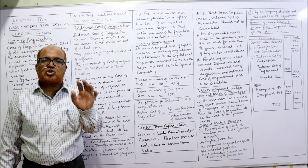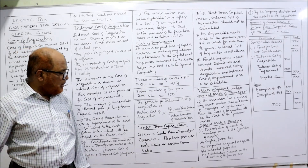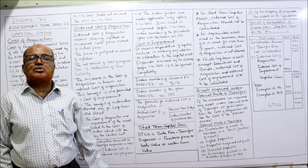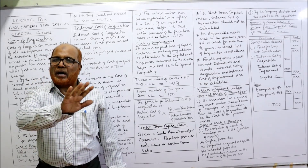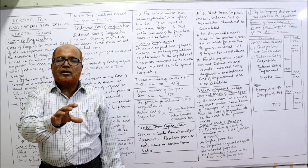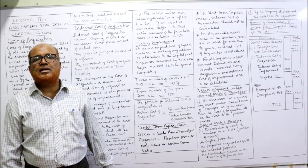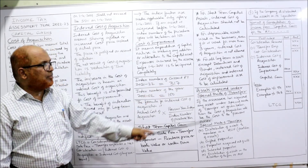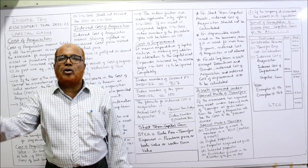For short-term capital gain there is no indexing. STCG is calculated directly as: sale price minus transfer expenses minus purchase price or book value or written-down value. Indexed cost of acquisition is confined only to LTCG. Similarly, for depreciable assets used in the business, the gain arising is always short-term capital gain irrespective of the period of holding, so no indexed cost of acquisition is calculated. Thirdly, for all long-term capital assets except debentures and bonds, indexed cost of acquisition and indexed cost of improvement are to be calculated.